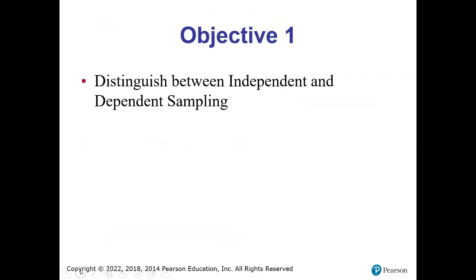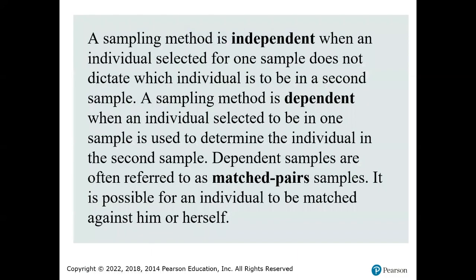How do we know if we have independent or dependent sampling? A sampling method is independent when an individual selected for one sample does not dictate which individual is in a second sample. Basically, a lot of times we have random sampling. If I pick random people for the first one and then random people for the second one, that is most likely to be independent.